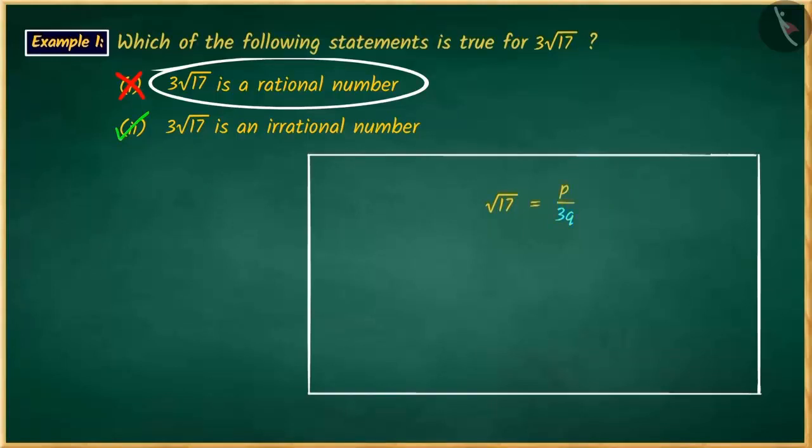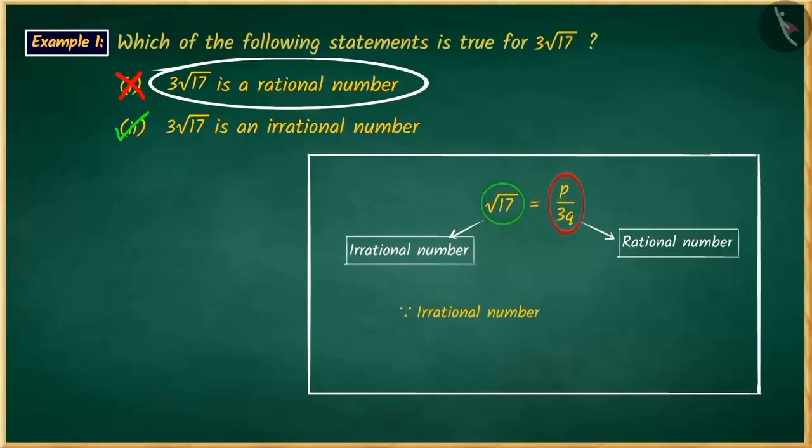So, p/3q will be a rational number. Hence, on the left side, √17 should also be rational. But you missed out the fact that √17 is an irrational number and no irrational number can be equal to a rational number. Because of this, your answer is wrong.